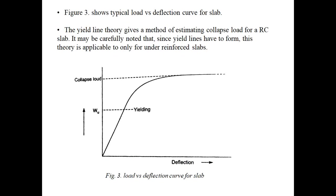Figure 3 shows the typical load versus deflection curve for a slab. The y-axis is the load and the x-axis is the deflection. At the factored load W, yielding starts and continues. At the top of the curve is the collapse load, at which the slab may fail or continue deflecting. Cracks start developing from the yielding point onward, and at a certain limit the slab may fail. This is the load versus deflection curve.